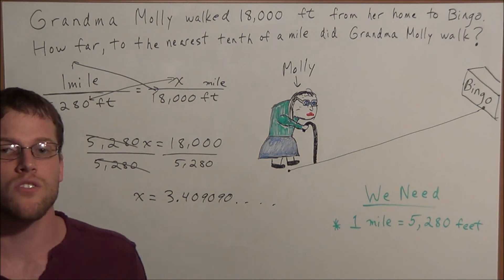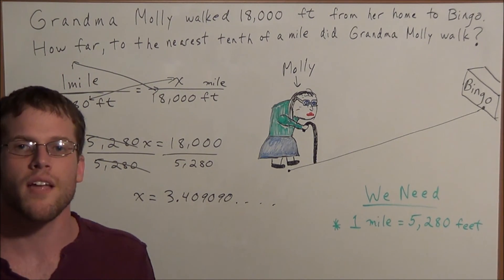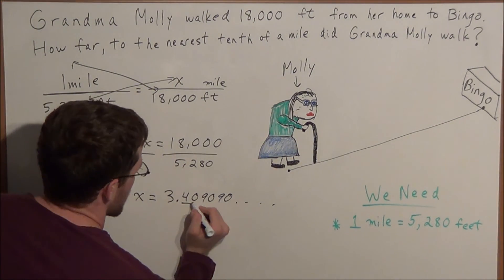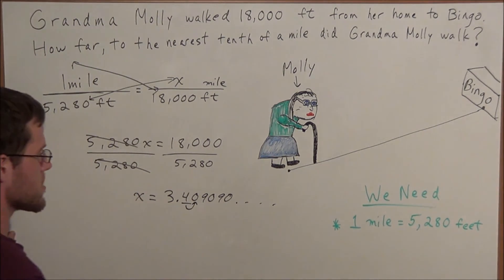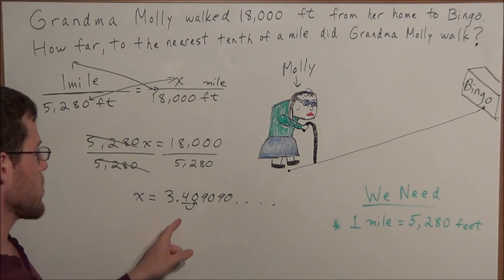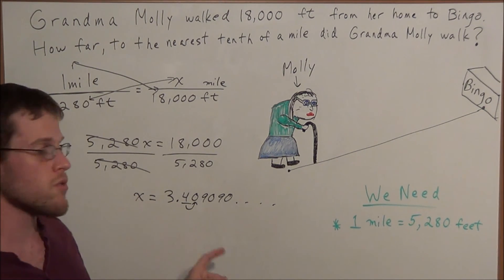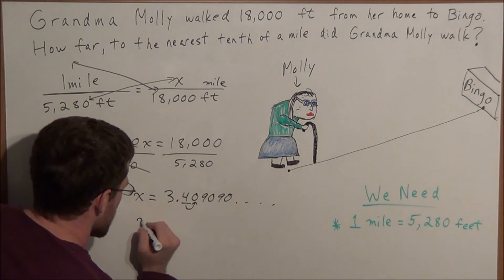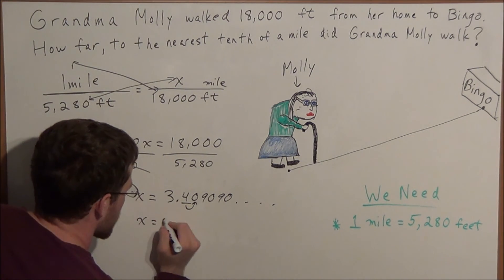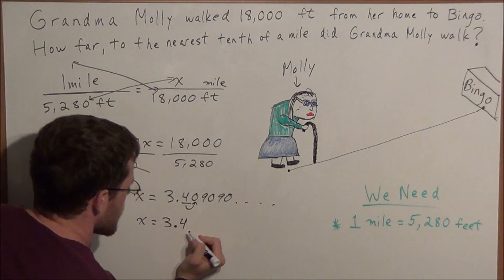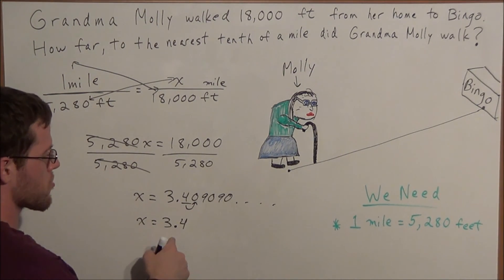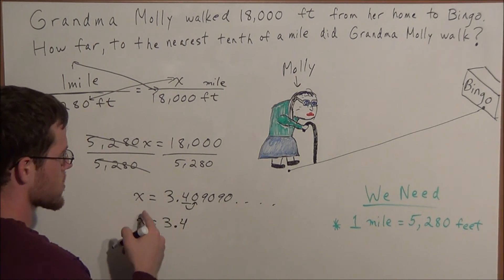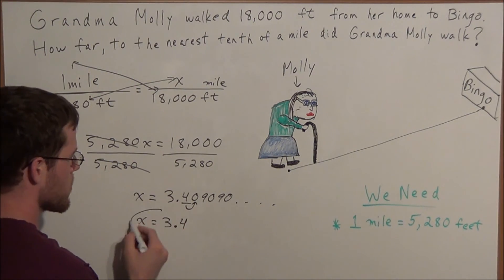But remember, the question asks us to round to the nearest tenth of a mile. So we look to the tenths place, and we look one unit to the right of the tenths place. One unit to the right of the tenths place is a zero, which tells us to keep this value at 3.4. If it was a 5 or higher, we would round this to 3.5, but since it's a zero, we're going to round x to 3.4.